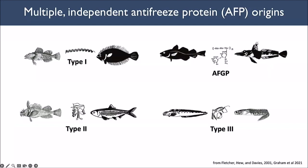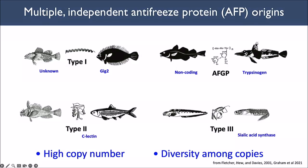There have been multiple independent origins of antifreeze proteins in polar fishes. I like to show these because they have very different structures — they're convergent to the same function but have independent origins. They're characterized as type I, II, or III, and there are also antifreeze glycoproteins characterized by an alanine-alanine-threonine repeat. They have different origins in the genomes, and in the glycoproteins there are two different independent origins — one at each pole. Two similarities found across antifreeze proteins are high copy number in the genome and diversity among copies.